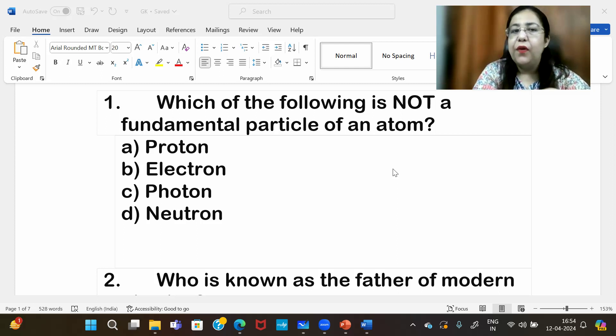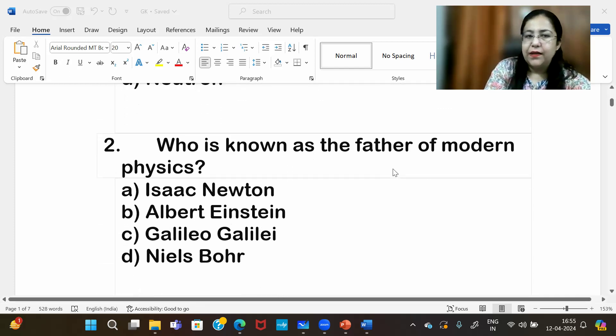The first question is: which of the following is not a fundamental particle of an atom? You can check from the basic junior classes of your science. You can post the answer in the comments, or at the end you can tell me how many answers you got right out of 20. The right answer is photon, option C, which is not a fundamental particle of an atom. Proton, electron and neutron are, but not photon.